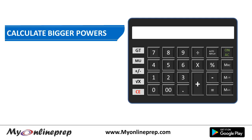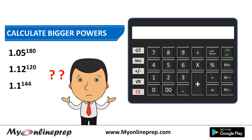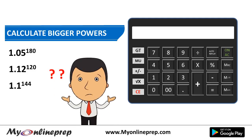Sometimes while solving an annuity problem we come across calculations like 1.05 to the power 180, 1.1 to the power 120, or 1.1 to the power 144. The question is how to calculate these on a simple calculator in the easiest way.